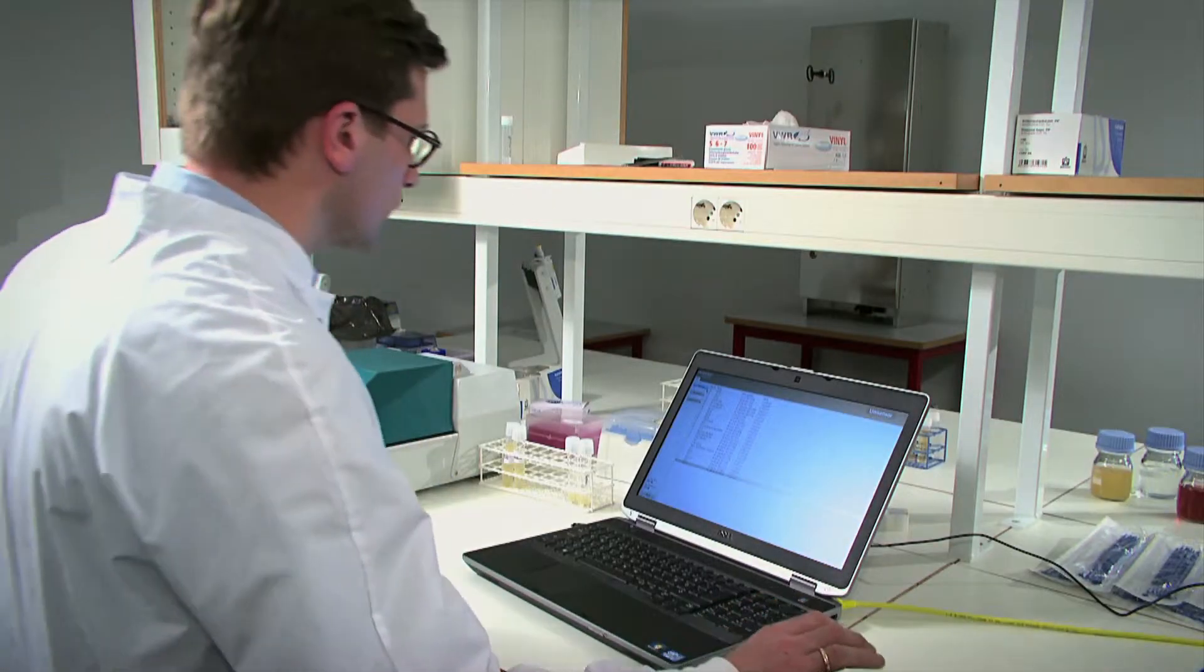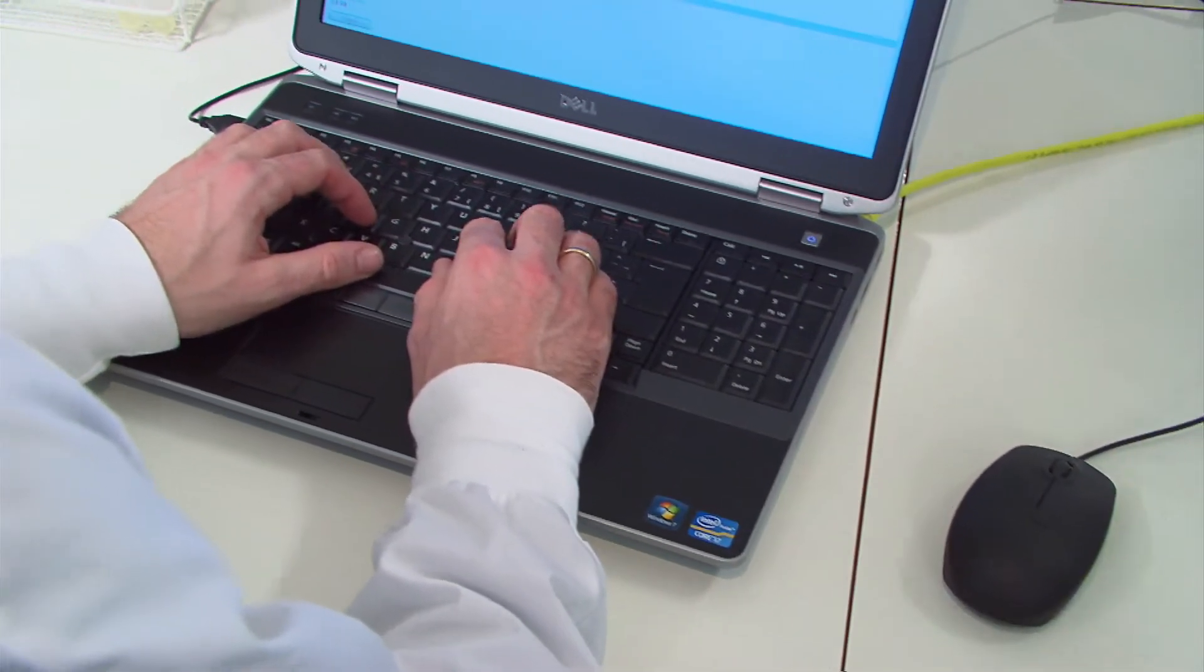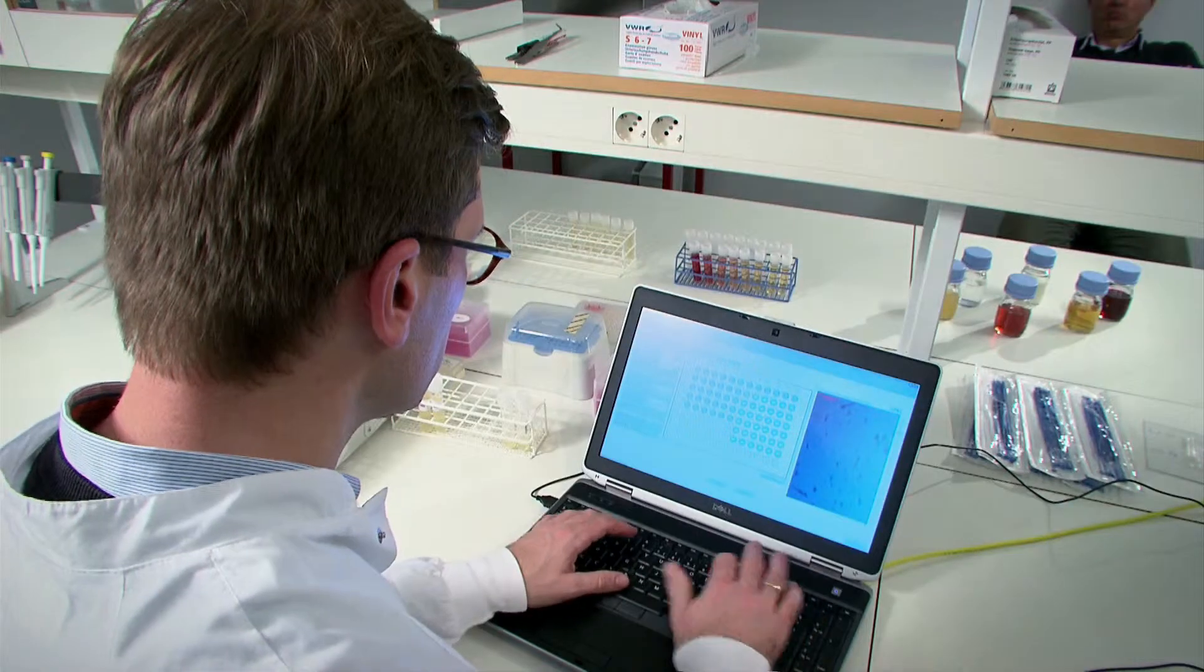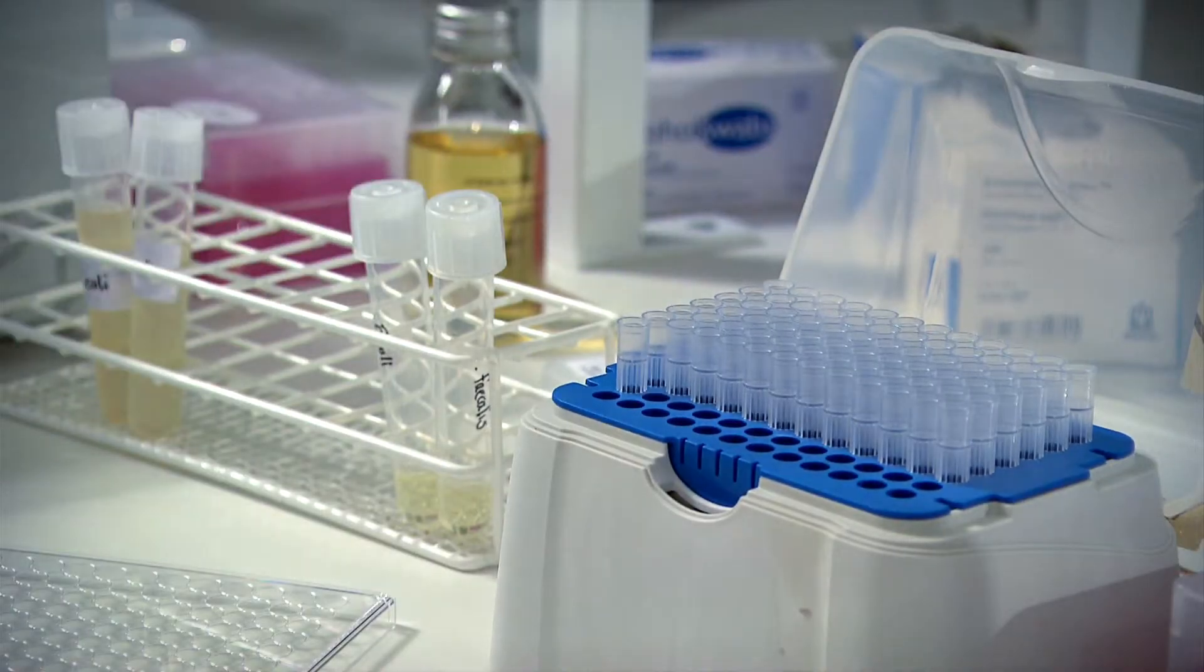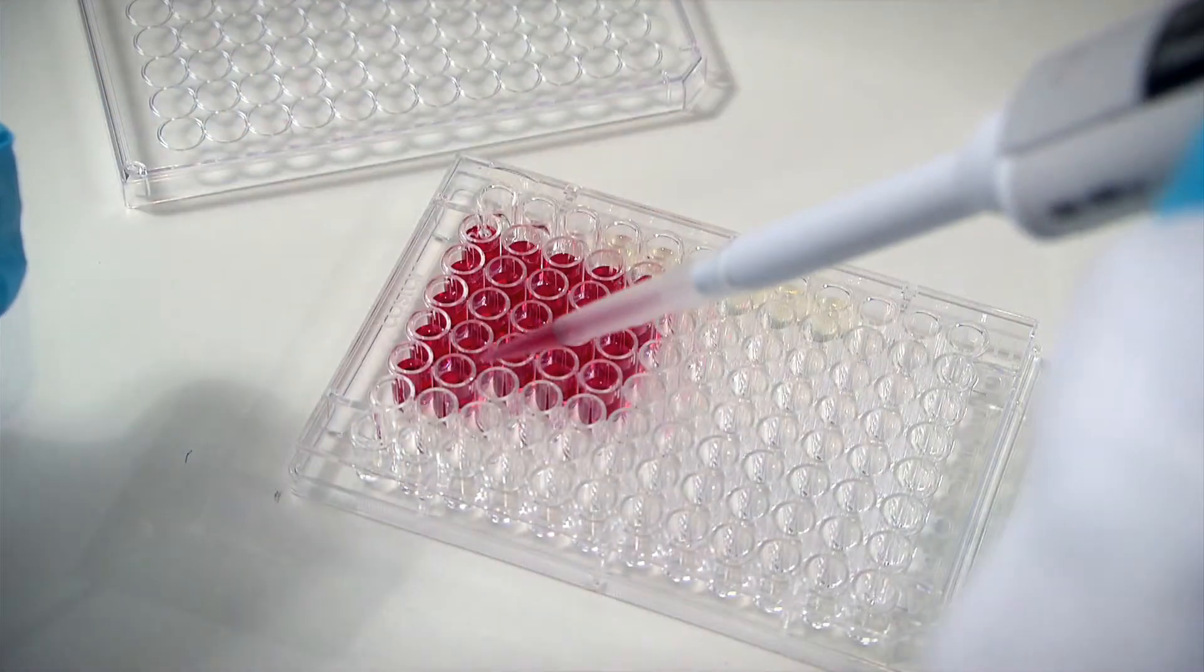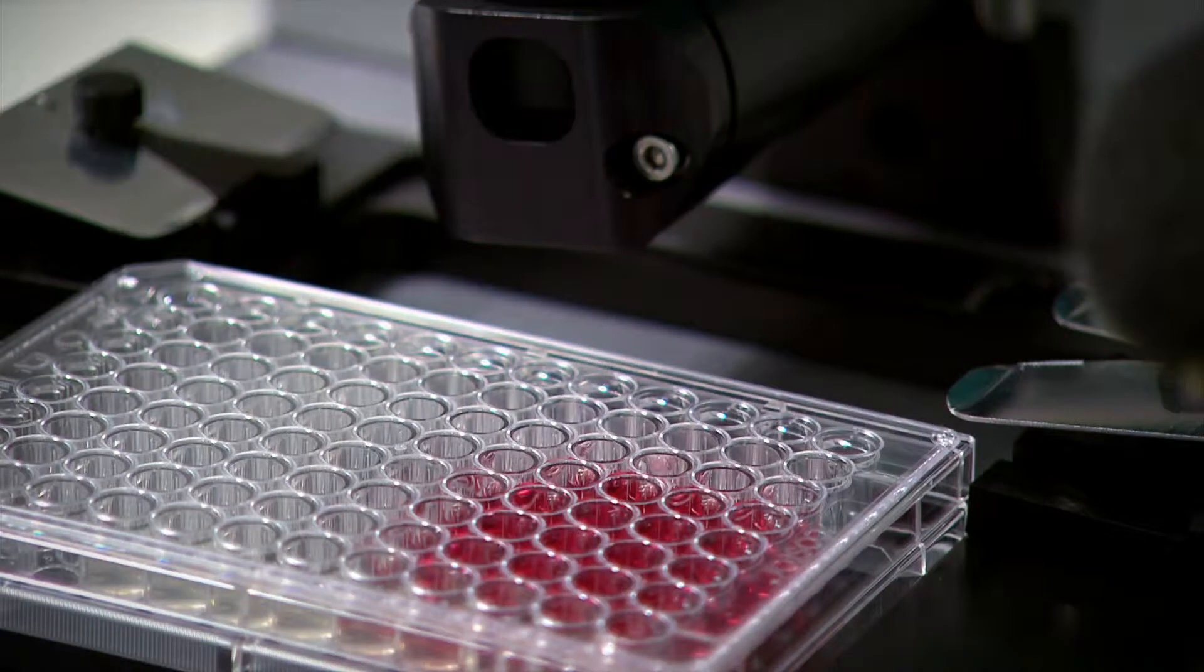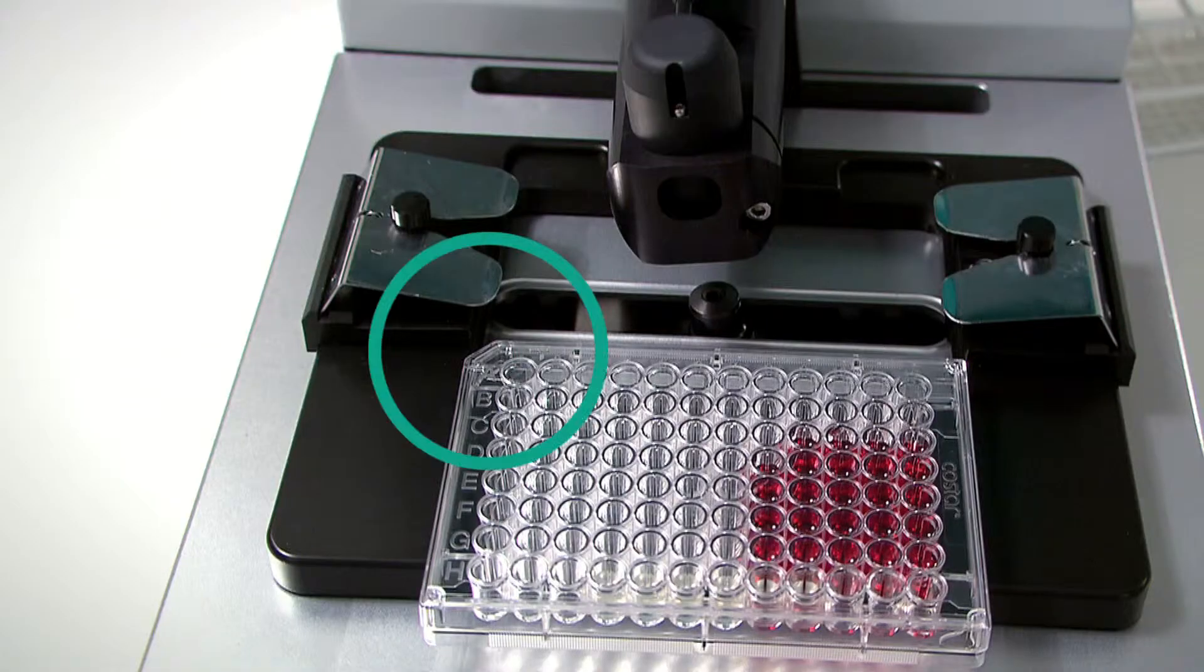Ocelloscope is run and monitored using a standard PC and only requires a normal network cable to connect Ocelloscope to the PC. The sample that has to be analyzed is pipetted into the microtiter plate. The microtiter plate is then inserted into Ocelloscope with well A1 at the upper left position.